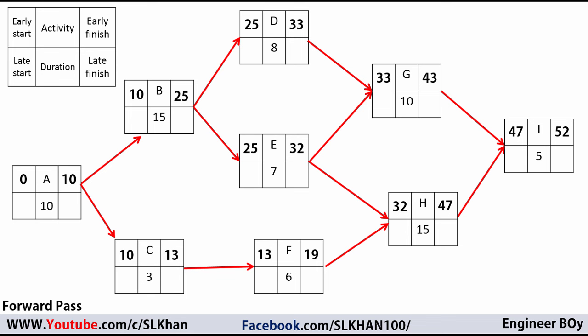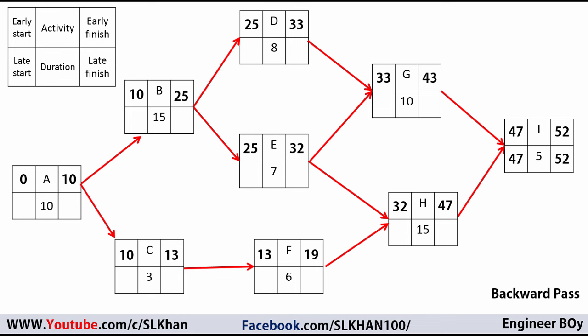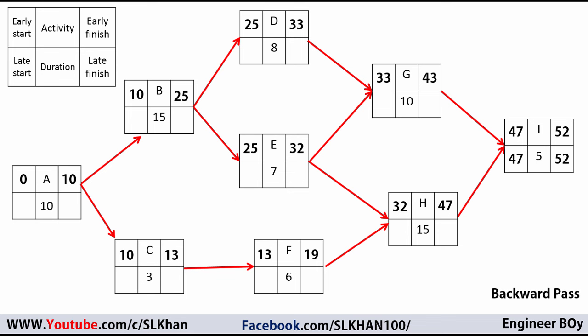Now we work out the late finish and late start for each activity — this is the backward pass process. Activity I has an early finish of 52 days, so its late finish is also 52 days. Subtracting the duration: 52 minus 5 gives a late start of 47 days for Activity I.